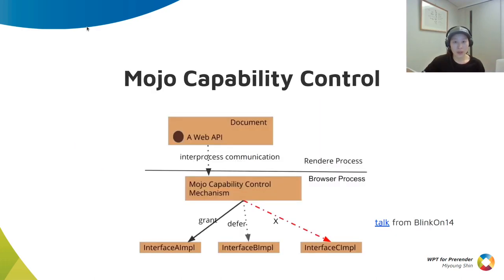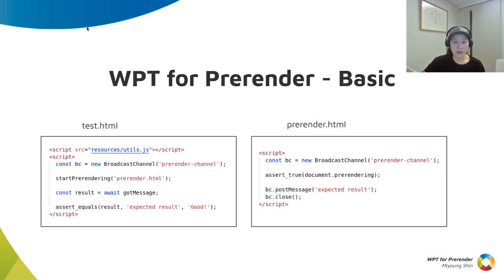We should understand Mojo Capability Control, called MCC. It's used to intercept all mojo interfaces before binding them, to restrict web API features on pre-rendering pages. So we can control web APIs by granting, deferring, canceling, or killing. Please see the details from previous talks.